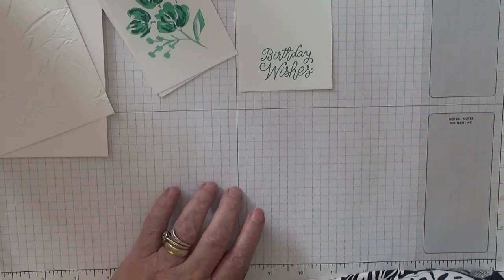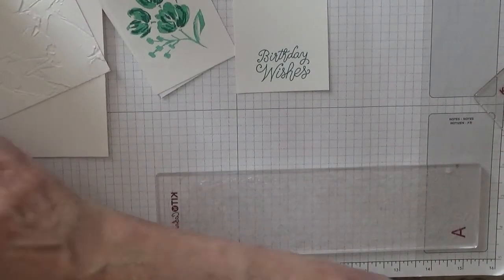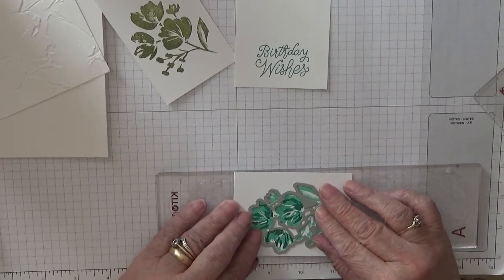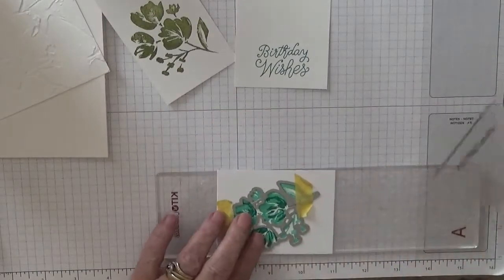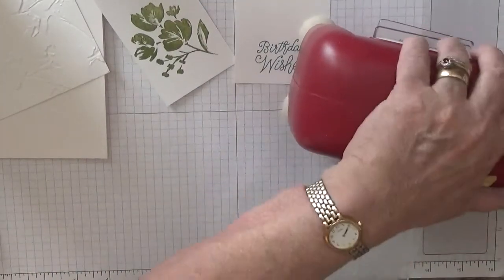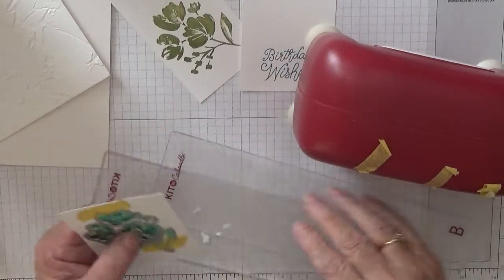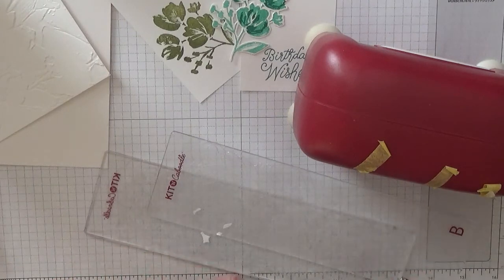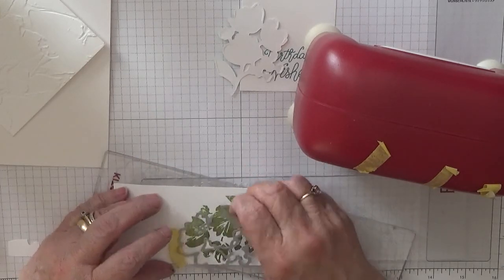All right, now we need our cutting plates and our die that goes with the set. And we're going to cut these out. On this one I'm only paying attention to the top flowers because I'll be chopping off the leaves. And then we want the leaves there.